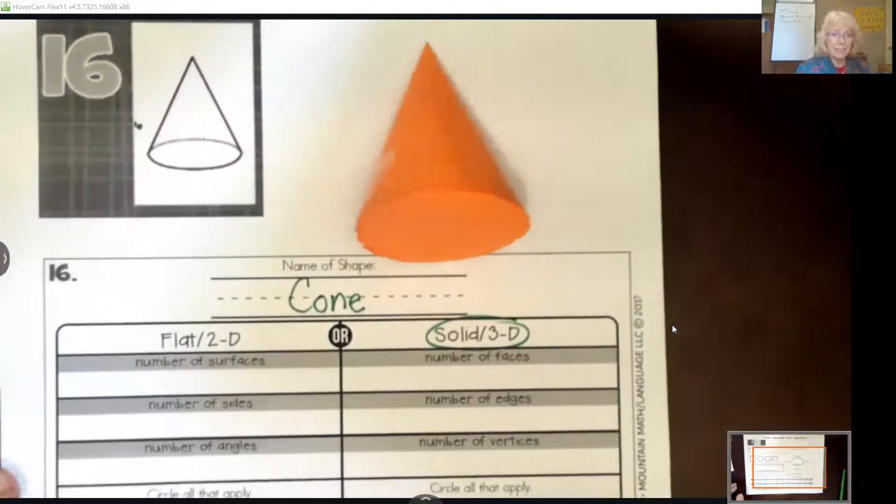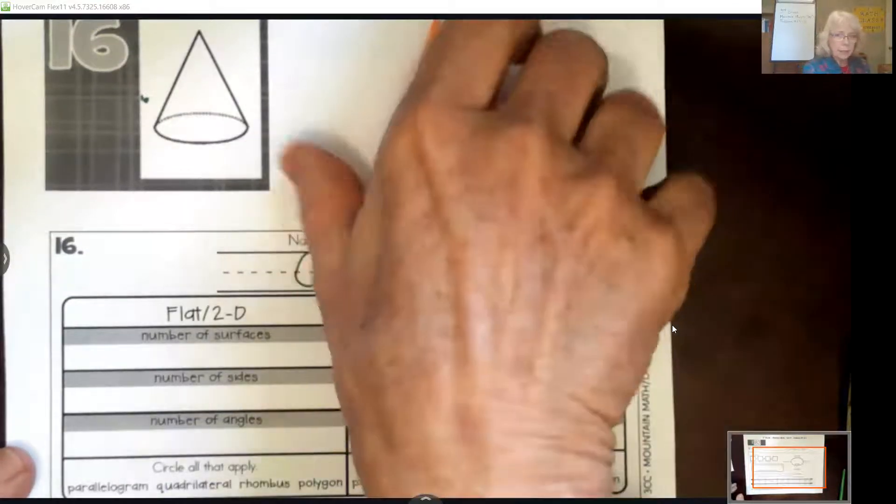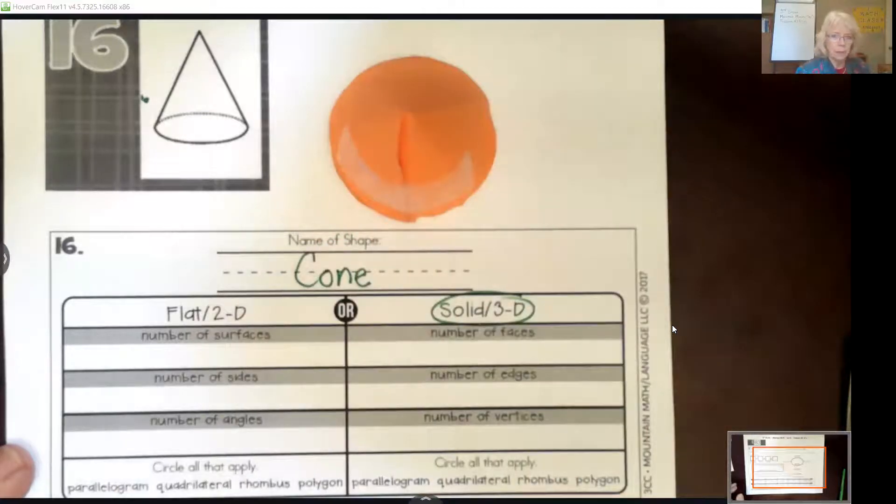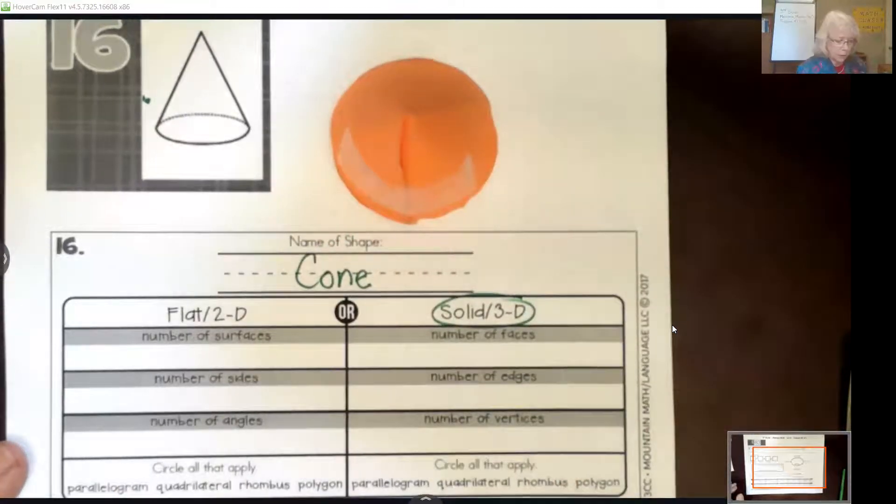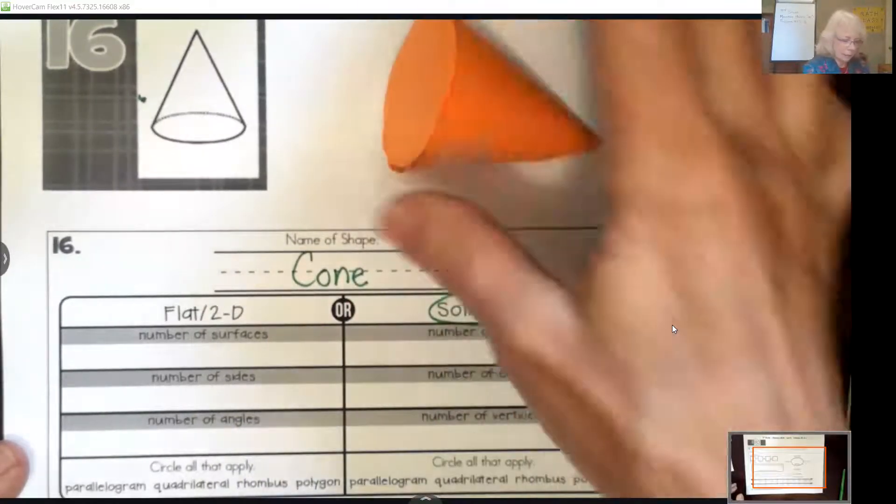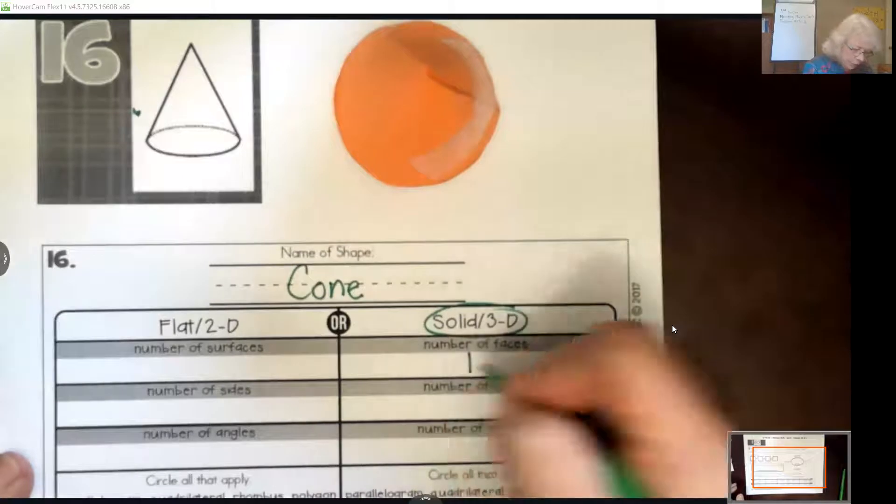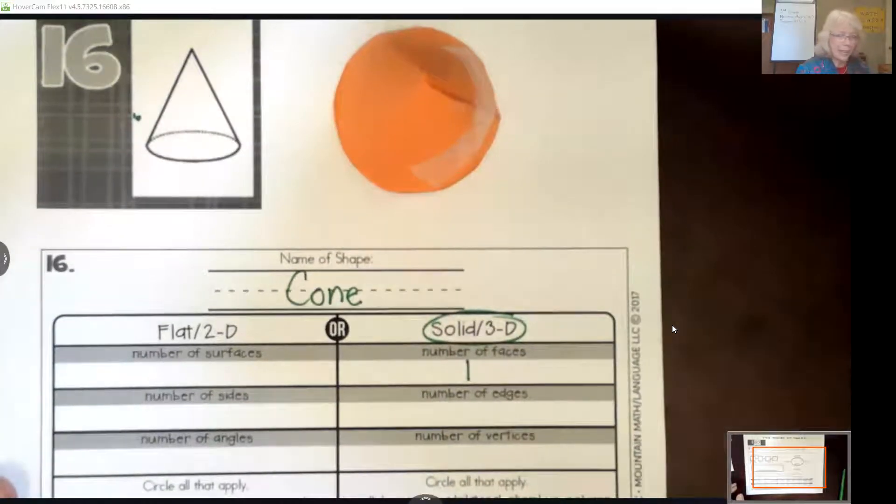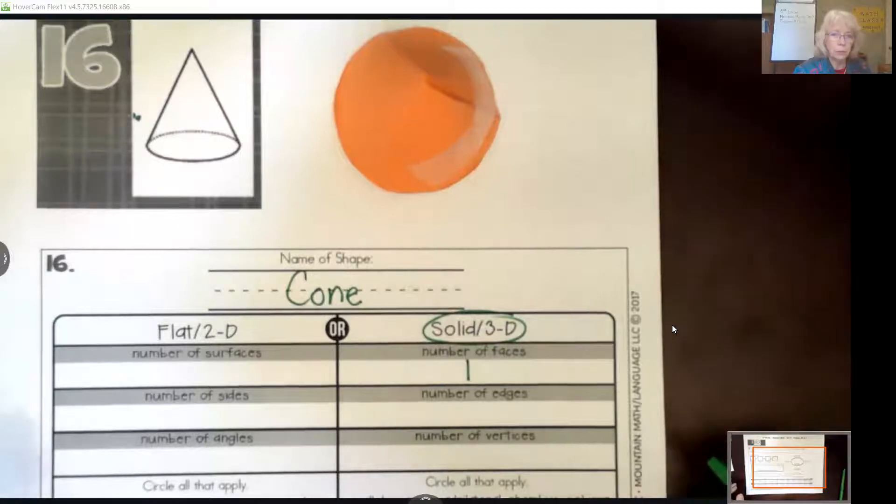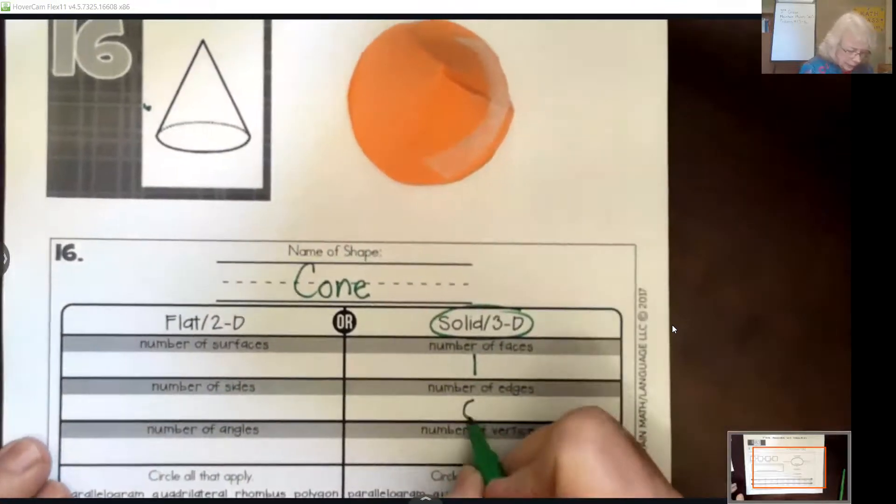Now, number of faces is very challenging with a cone because people get that very confused. Faces is how many flat surfaces there are. Not how many surfaces there are. So the only flat surface in the cone where you can lay it flat is the base. And that is one. So the answer to this is one face. Now it asks how many edges. So edges in a three dimensional shape is where two flat surfaces or two faces come together. Well, since we only have one face, the answer to this is zero.